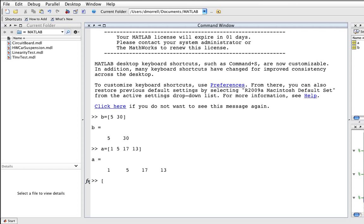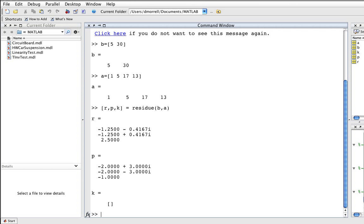Then we're going to say R, P, K is equal to residue of B, A. And hit return. And there we have our values for the partial fraction expansion.